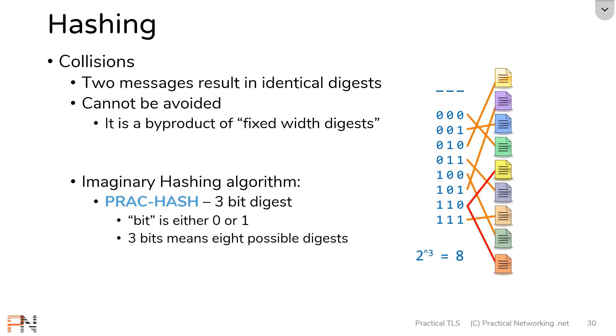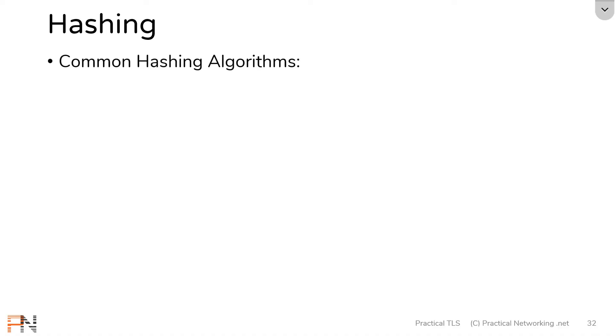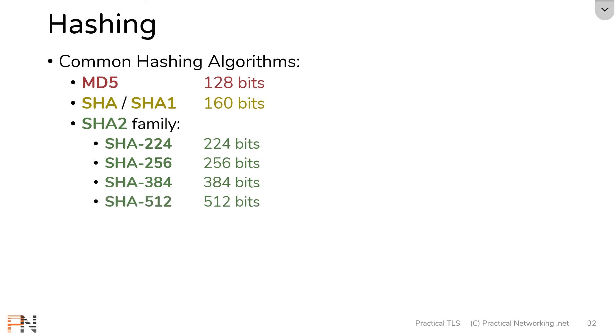Now they cannot be avoided. All you can really do is make them more rare. Generally, hashing algorithms that have a higher bit digest output are considered to be more secure simply because they make collisions more rare. And finally, the last thing I want to show you is just a list of hashing algorithms that exist out there. We've already talked about MD5 just a little bit, but the two most common ones you'll see are MD5 and SHA or SHA-1. They each produce a digest that is 128 bits or 160 bits. Then you also have the SHA-2 family, which is a family of algorithms that can produce different length digests depending on your security requirements.